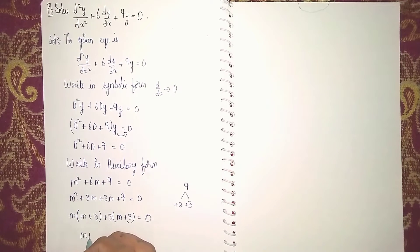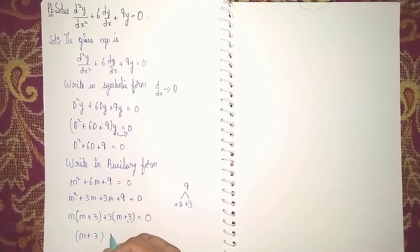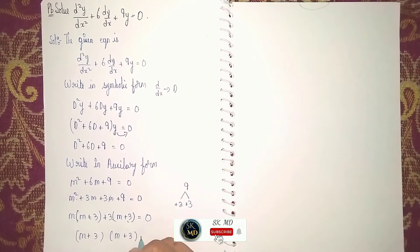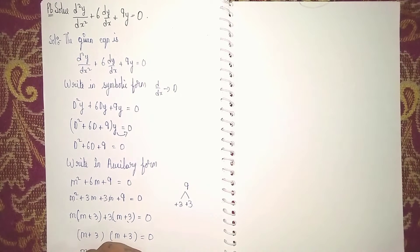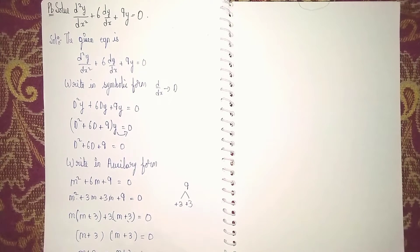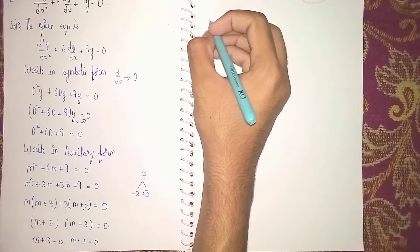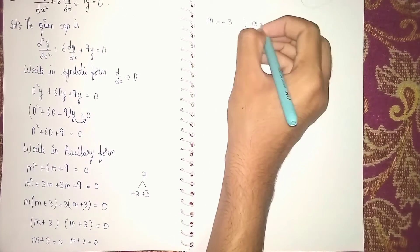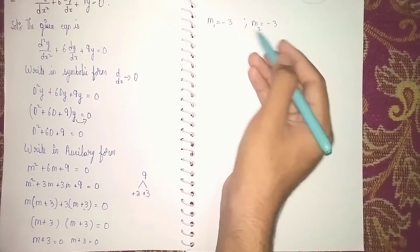Then here m + 3, take common. Both are common. Then here also m + 3 outside also there. It becomes (m + 3)(m + 3) = 0. Now separately equate this function with 0. It will become m + 3 = 0 and m + 3 = 0. They will become m = -3 and m = -3.